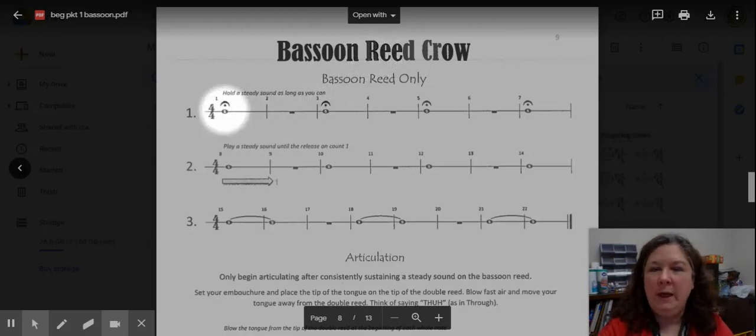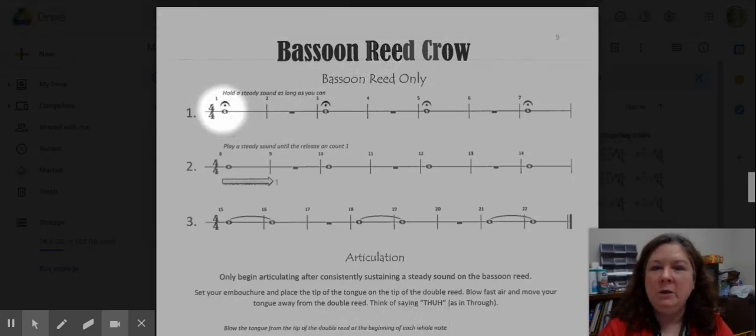And we're going to start with line one here. I want you to notice this weird looking symbol over the top of this note. This is called a fermata. Some people call this a bird's eye. In Italian, the word fermata means to stop. So, if you go to Italy, you don't have stop signs. You have fermata signs. It means stop.